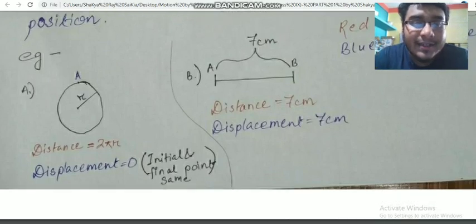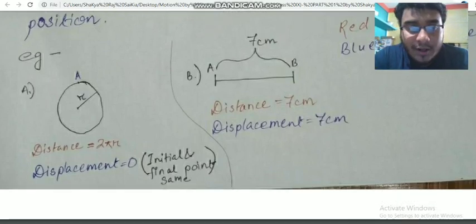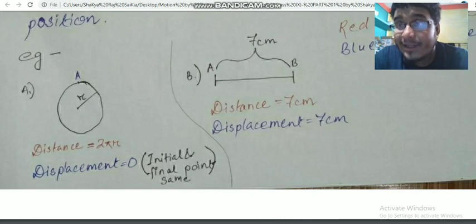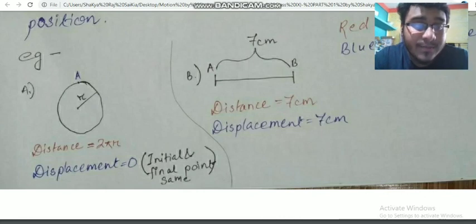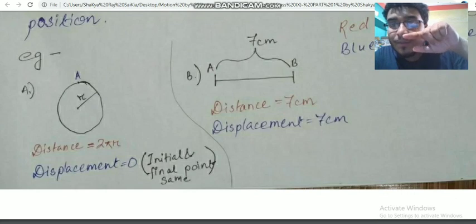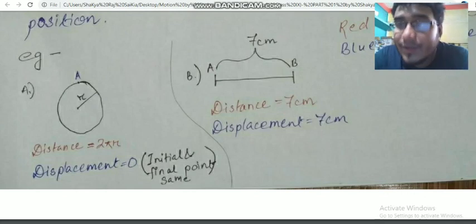Displacement is the measured part between the initial and final position — the straight-line length between them. For example, for a circle with radius r starting at point A and returning to point A, the distance is 2πr (the full circumference), but the displacement is zero because the initial and final points are the same.